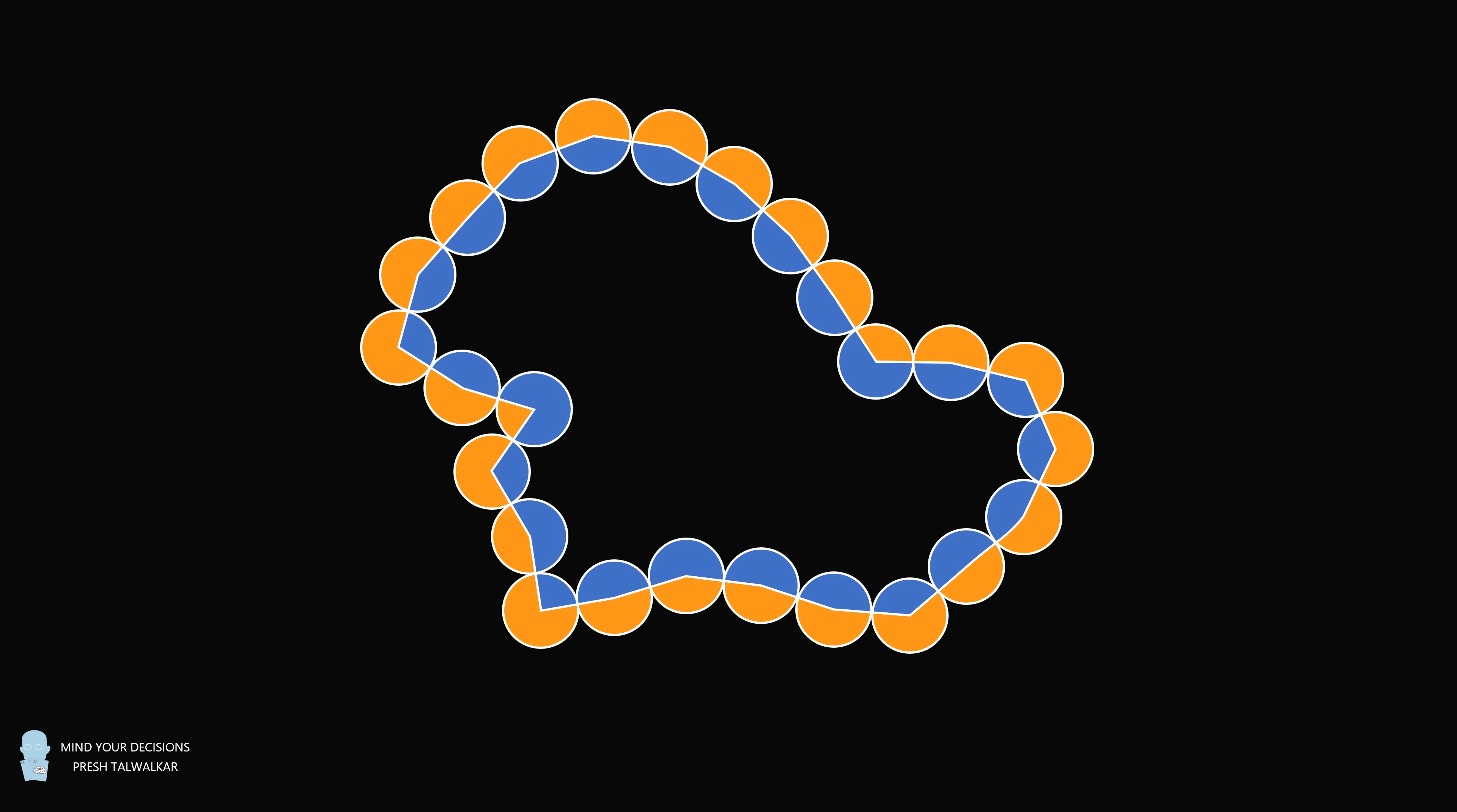Hey, this is Presh Talwalker. Here we have a string of beads formed by circles of the same size. The string passes through the center of each circle. So we have 25 circles of the same radius r.